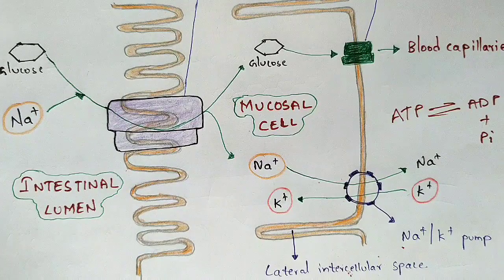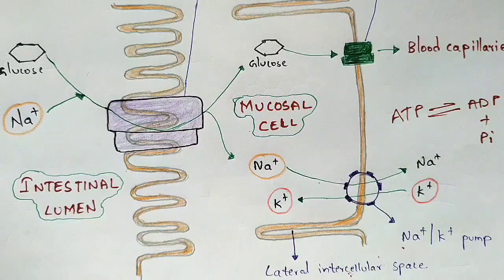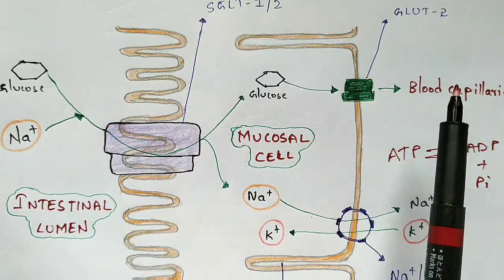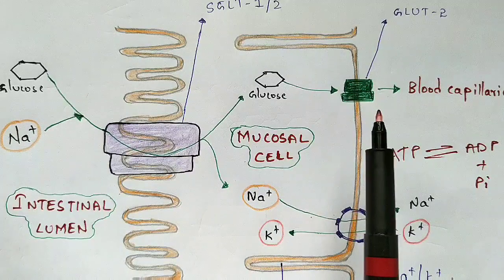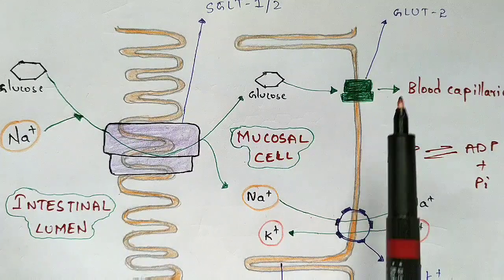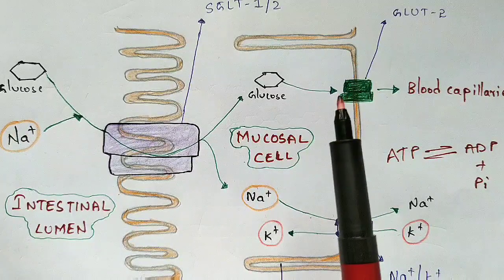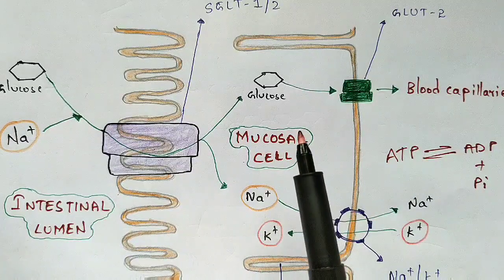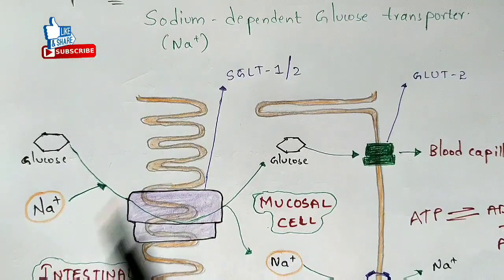This is the whole phenomenon of absorption of carbohydrates — the glucose molecule present in the intestinal lumen enters the mucosal cell and finally reaches the blood capillaries. When it enters the blood, the blood circulates to all parts of the body, supplying glucose everywhere. We utilize this glucose as energy to perform any type of work.